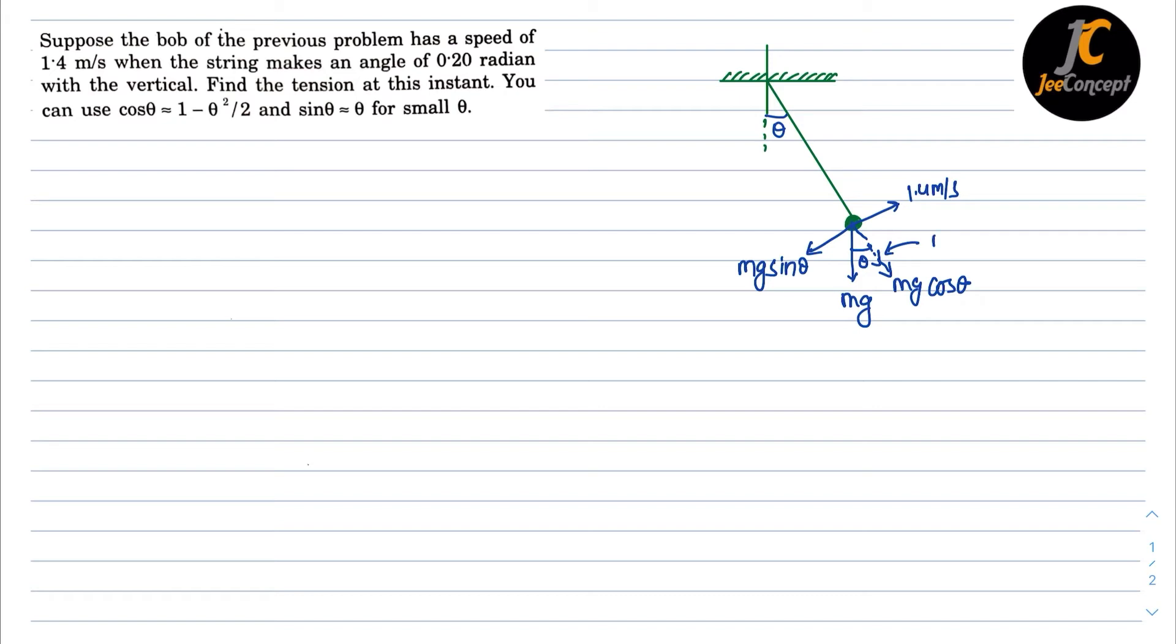The tension in the string is T. Now from this, we will get T equals mg cos theta plus mv² by r.